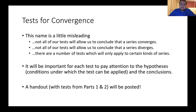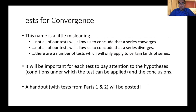We refer to these as tests for convergence, though that name is a little misleading. Not all of our tests will allow us to conclude that something converges — sometimes they tell us something diverges. And not all tests allow us to conclude divergence either. Sometimes a test says: if the following criteria are met, then it converges, but if the criteria aren't met, we don't know whether it diverges. So these tests are a mixed bag in terms of what you can actually conclude.